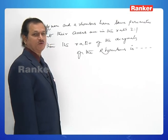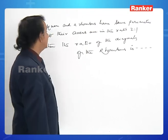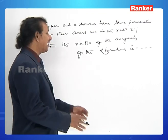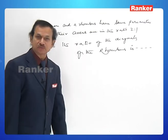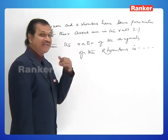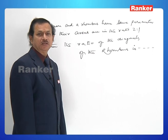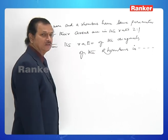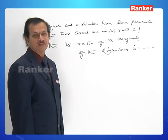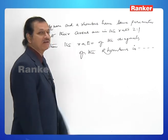The next problem: a square and a rhombus have the same perimeter, but their areas are in the ratio 2 : 1. Find the ratio of the diagonals of the rhombus.